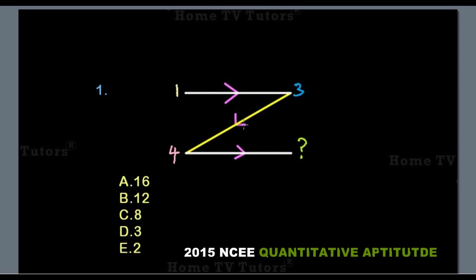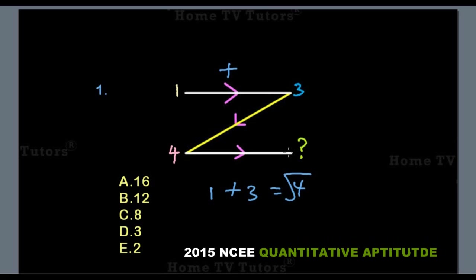Let's solve this question with the previous pattern studied in the given sample. This plus this — that is, 1 plus 3 — gives us 4. And the square root of 4 is what gives us the unknown number we are looking for. The square root of 4 is 2. So the answer option E is the right answer.